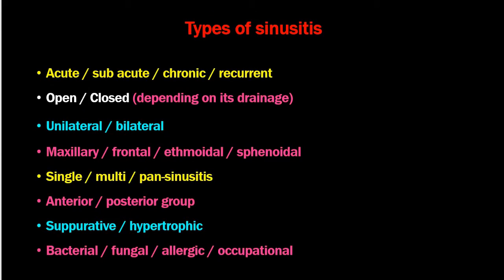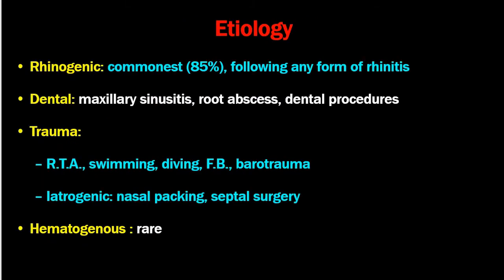The types of rhinosinusitis include acute, subacute, chronic, and recurrent. They may be open or closed depending on drainage through the sinus ostium; unilateral or bilateral; affecting maxillary, frontal, ethmoidal, or sphenoidal sinuses. They may also be classified as single or multi-sinus, anterior or posterior group, suppurative or hypertrophic, inflammatory, immune-allergic, bacterial, fungal, or allergic.